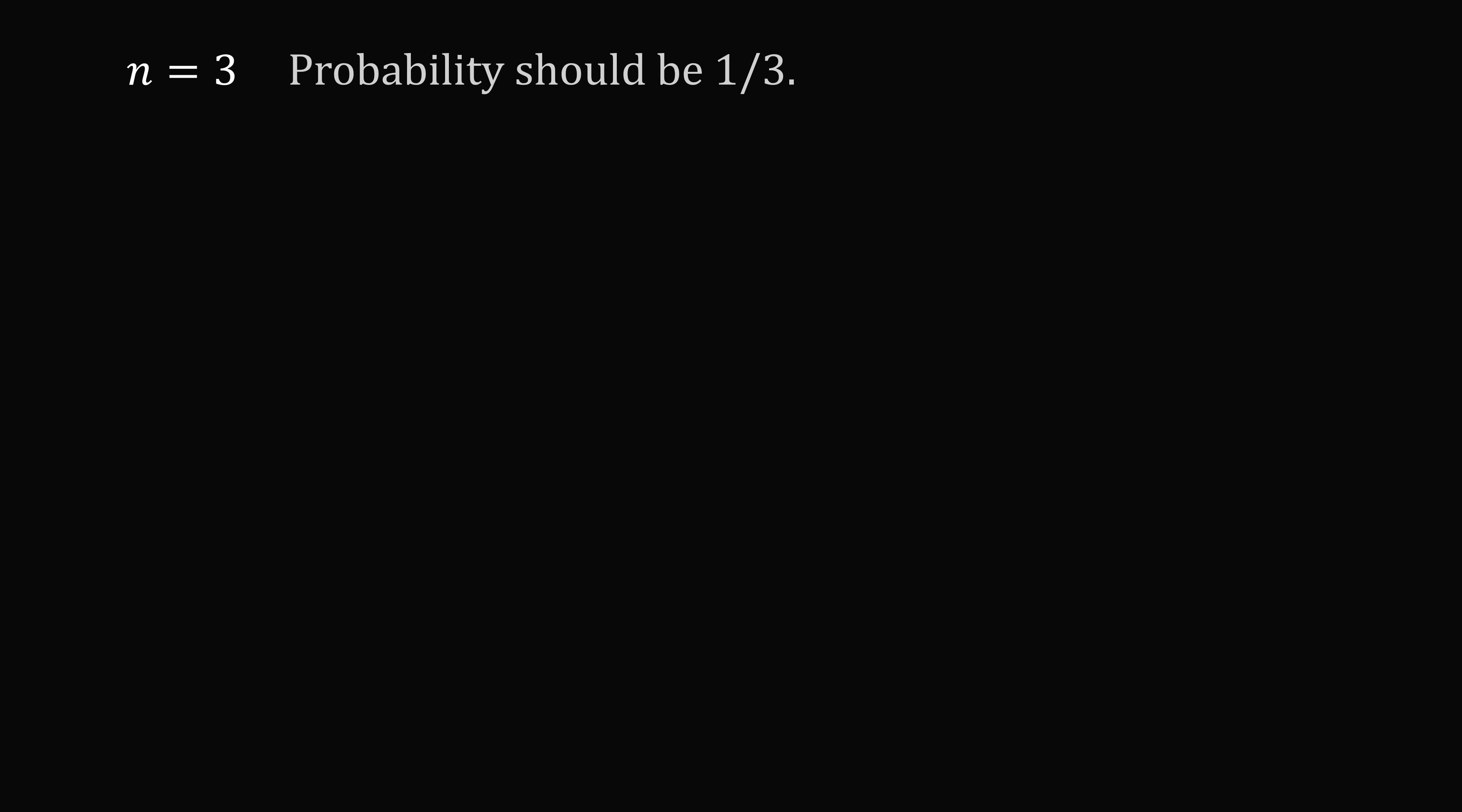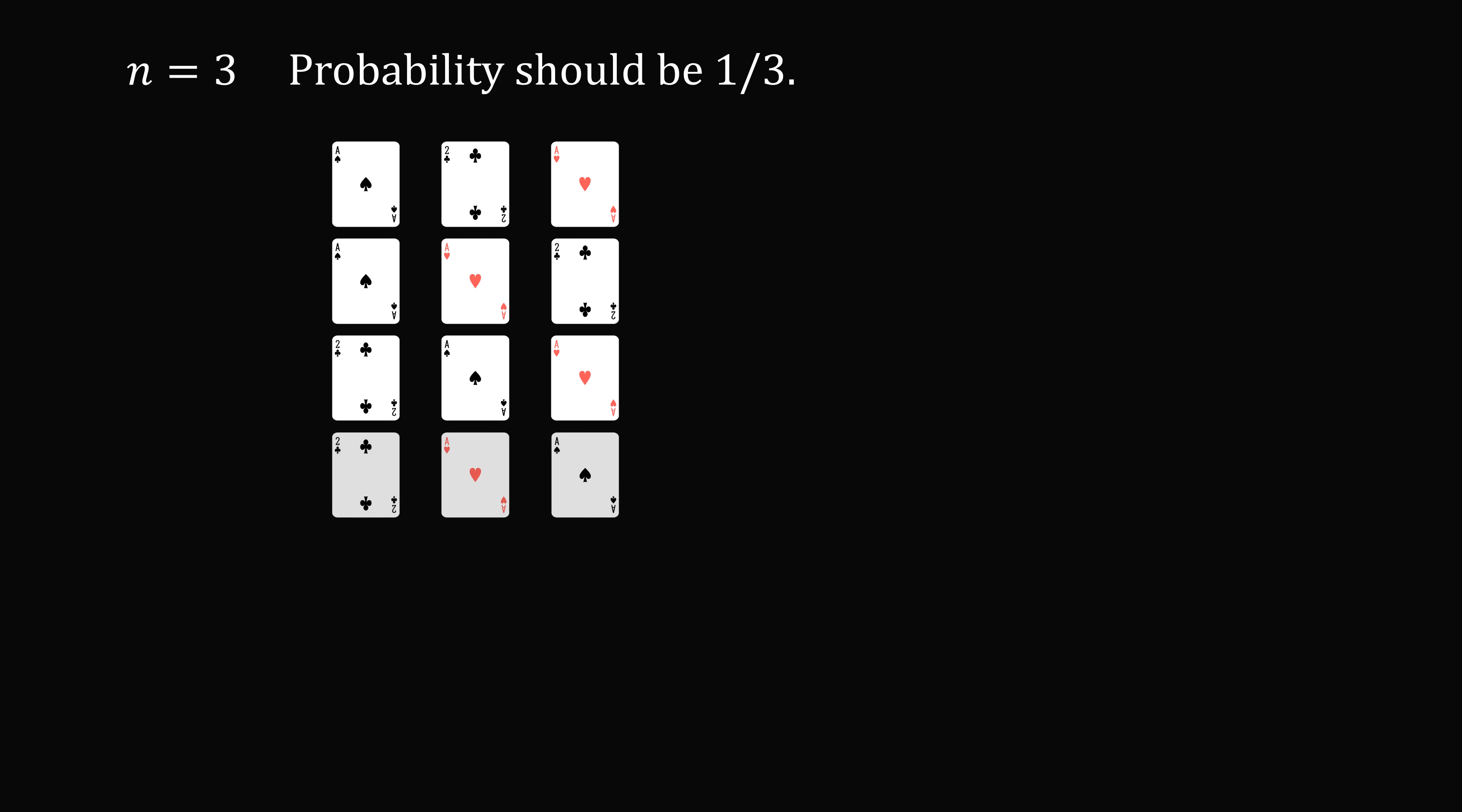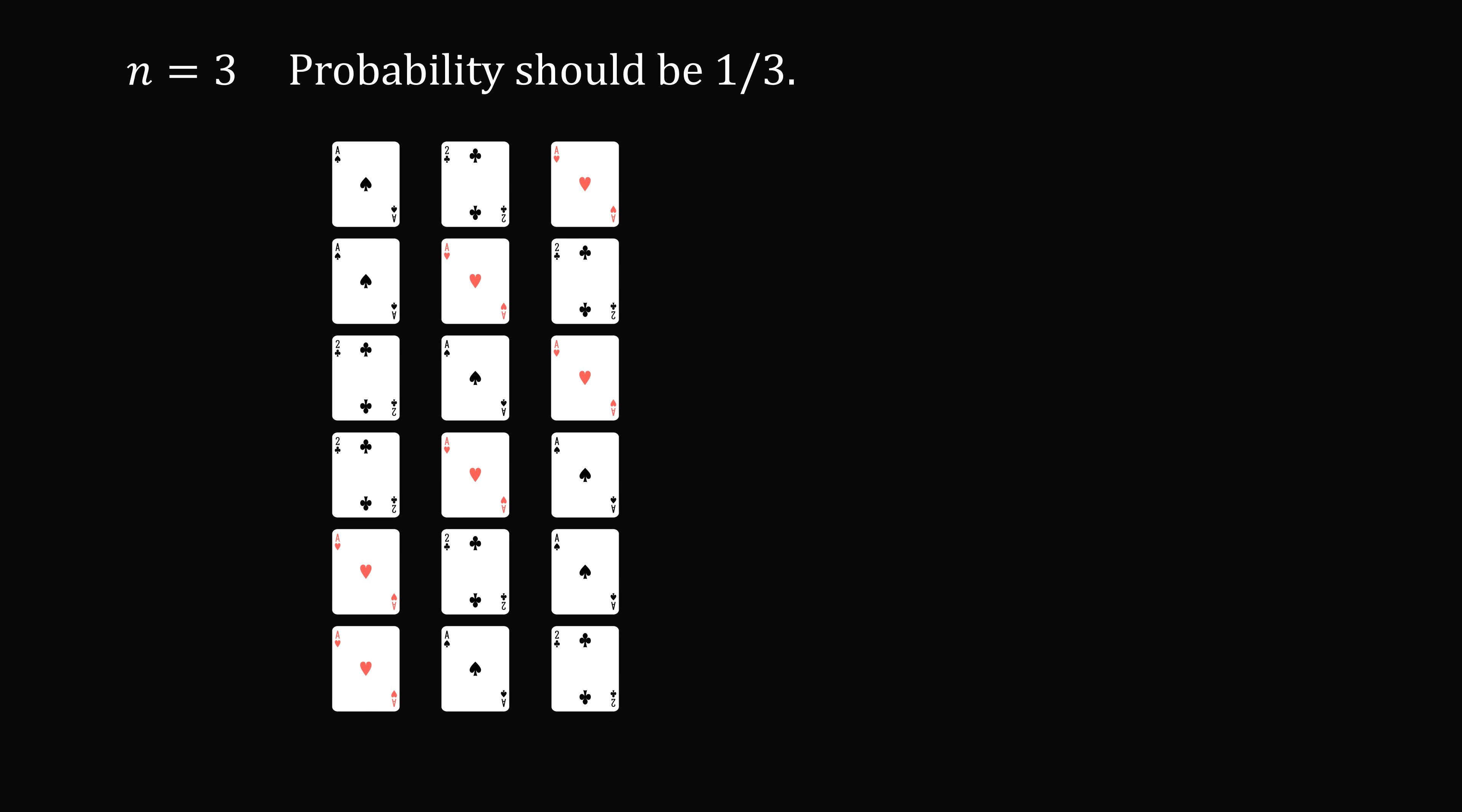So we'll take a deck of 3 cards, and the probability should be 1 over 3 for both cases. So we'll say a deck has 3 cards of the ace of spades, the two of clubs, and the ace of hearts. So how many ways are there to arrange a deck of 3 cards? There are 3 factorial, which equals 6 different ways to order the deck. So let's just put them all out.